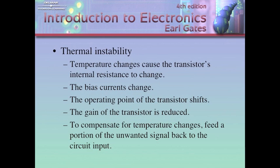One of the problems we're faced with in amplifiers because we use transistors is thermal instability. Temperature change causes transistors' internal resistance to change, the bias currents change, the operating point of the transistor shifts, and the gain is reduced. To compensate for temperature changes, we feed a portion of the unwanted signal back into the circuit input — this is feedback. This intentional feedback helps stabilize the output so that it's not prone to instability due to temperature change.